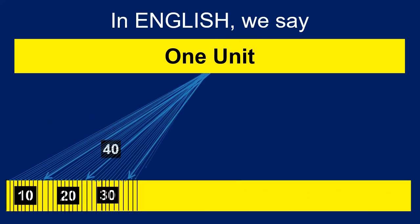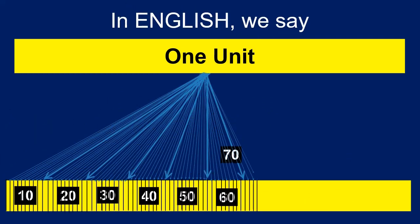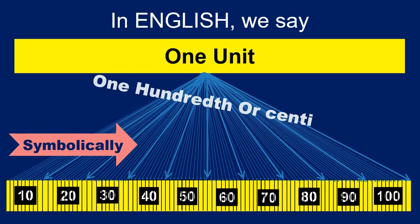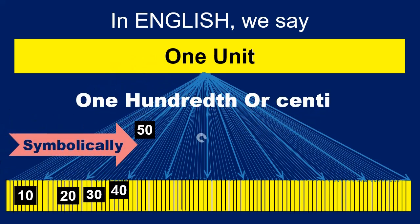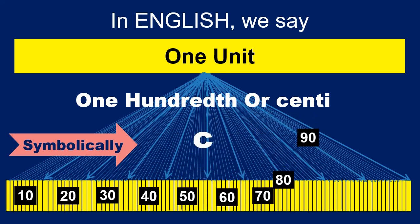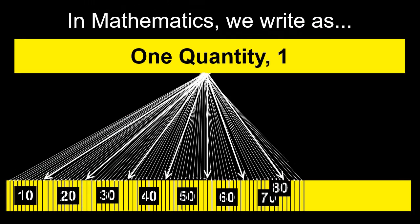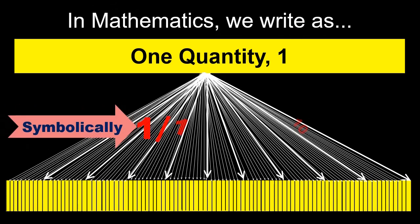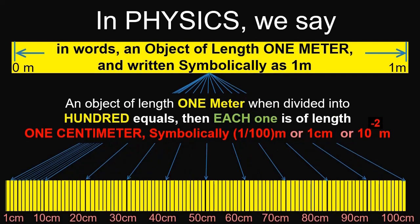When one unit is divided into 100 equal units, after division, each one is called as one hundredth or centi, represented with a small letter c. There are 100 such quantities. In mathematics, symbolically, we write each of them as one divided by one followed with two zeros, or ten raised to the power of minus two. In physics, we call each length as one centimeter, written as one followed with a small letter c and small letter m.